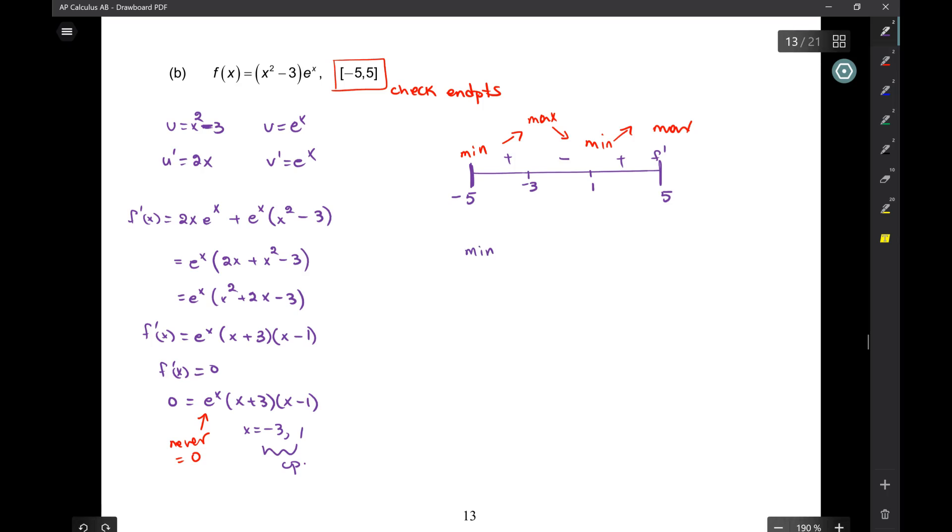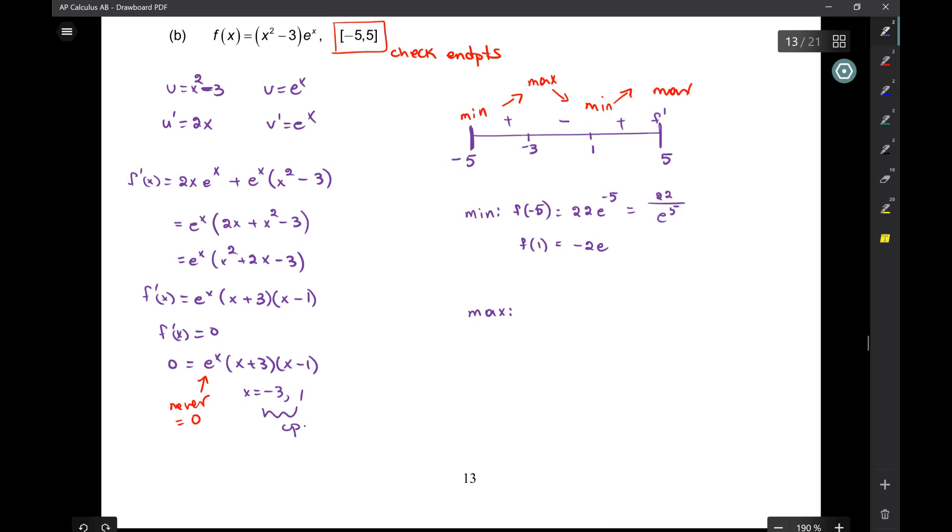So here's what we're going to do now. Watch. Where are my minima? Negative 5. f of negative 5 is a minimum, and also f of 1. Okay, so where am I going to plug these into? The original. So for f of negative 5, I get 22 e to the negative 5. And I can't leave it like that. That's 22 over e to the 5. And then here I get negative 2e. Do not plug that in.